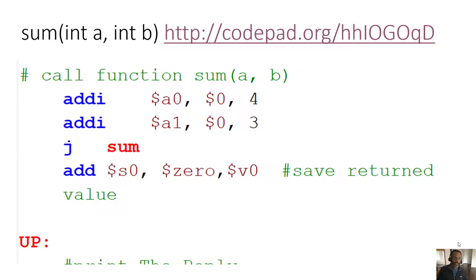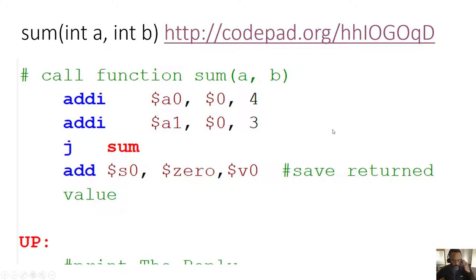Let's take a simple example: a function called sum that adds values a and b together. You can follow along at the CodePad link for hands-on experience. In this code, a pound sign is a comment. We do an add immediate which adds 4 and 0 to give us 4, move it into a register, then add immediate with 3 and 0 into another register, and then we call a function called sum by jumping to a particular label.